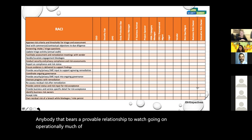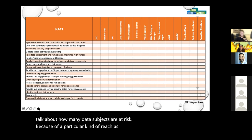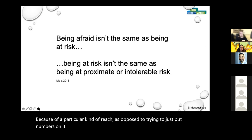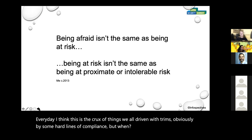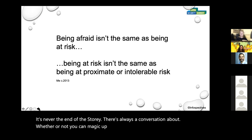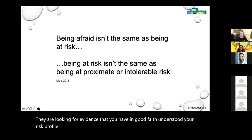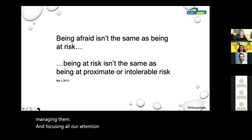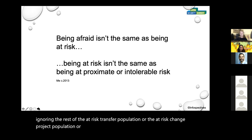It's probably far more honest and useful to have a conversation where you talk about how many data subjects are at risk because of a particular kind of breach, as opposed to trying to just put numbers on it. We are driven by some hard lines of compliance. But when a regulator says you just must do this, it's never the end of the story — there's always a conversation about whether you can magic up control or immediately cease processing. What they're looking for is a risk-based conversation: evidence that you have in good faith understood your risk profile, taken steps toward managing it, and focused your attention on what's most important.